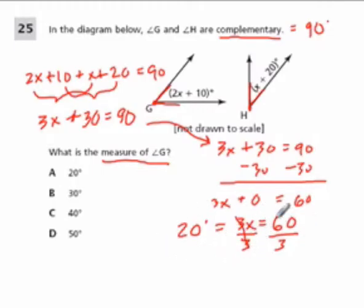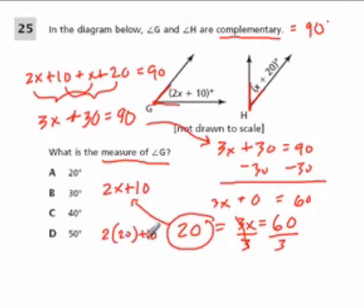This is right here, we have X. Angle G is what? It's 2X plus 10. So we take this value and plug it into this equation. And we get 2 times 20 plus 10, which is 40 plus 10, or 50 degrees. And I get D.